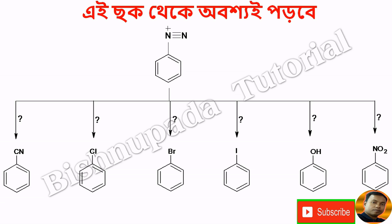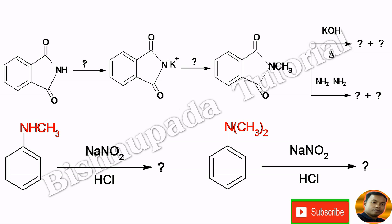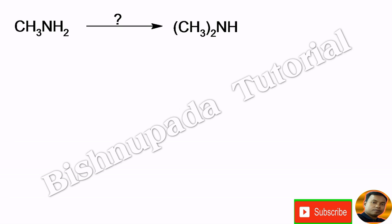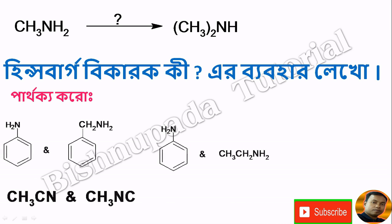Chlorobenzene, bromobenzene, iodobenzene, phenol, nitrobenzene — this is very important. This is Gabriel synthesis, which is very important. Thalimide — potassium phthalimide — which is very important. This is KOH-delta by NH2O2. NHCIC-1 like CNHCIIg2, which is very important. Dimethylamine and aniline, where CNHCII can make CICI2. We don't know if we have an inhalation and aniline — we have no words to cause.